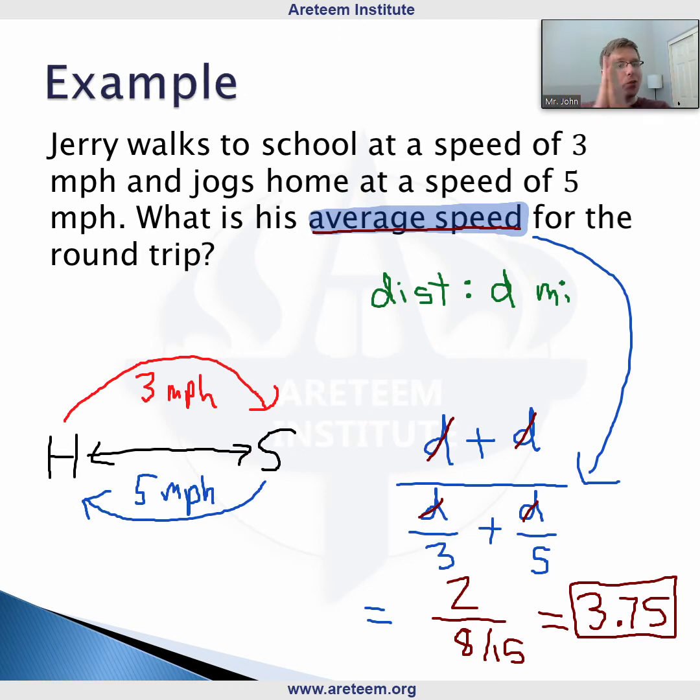Notice it's not right in the middle, because it takes longer for him to go to school, less time for him to come back. So it's a little bit more complicated than just saying the average speed in total is 4 miles per hour. It's actually a little less than that, 3.75.